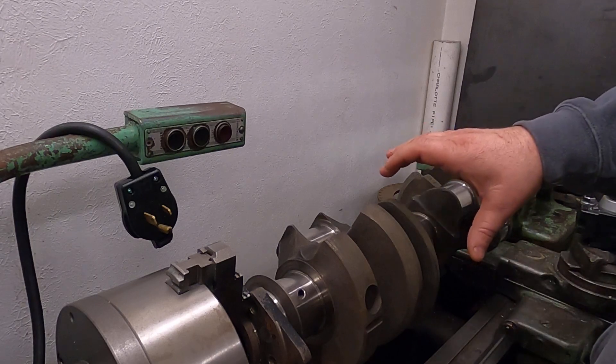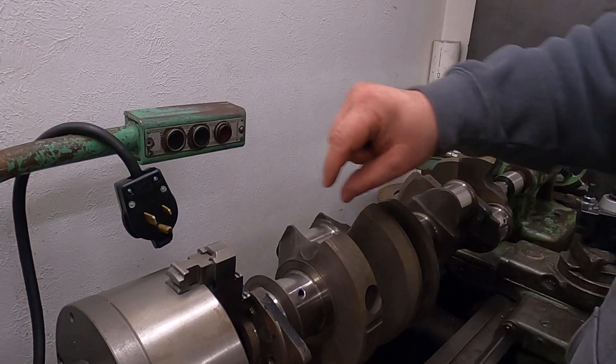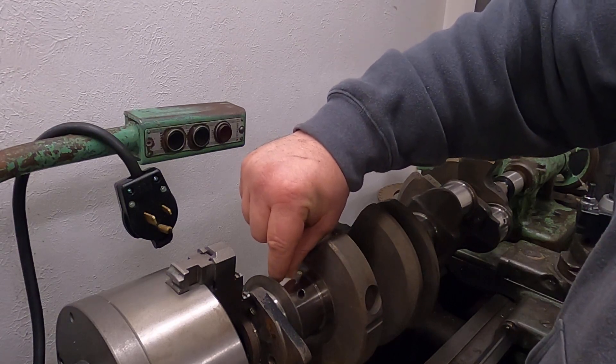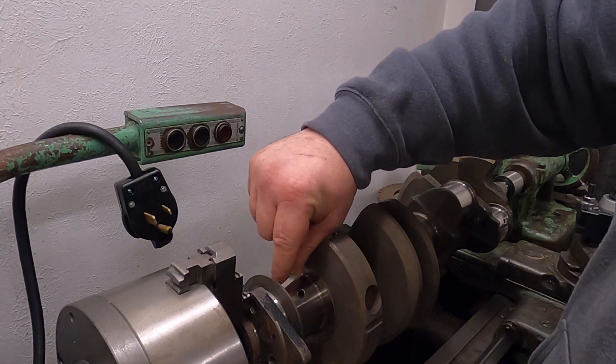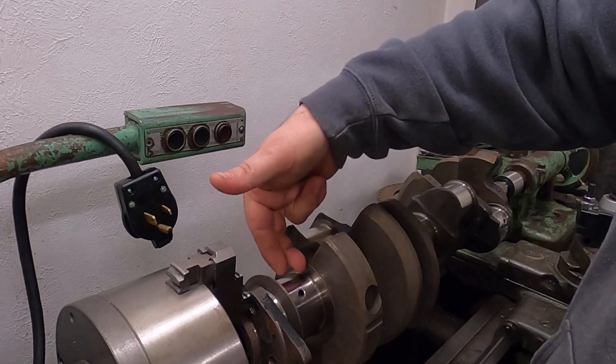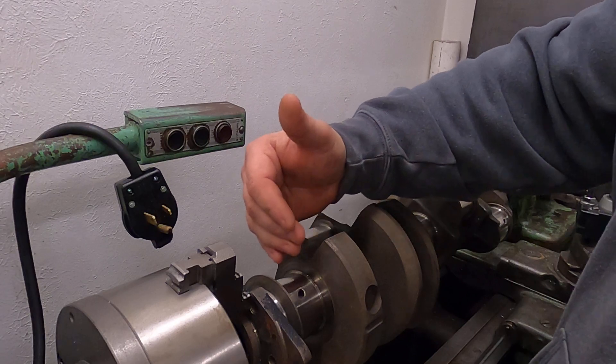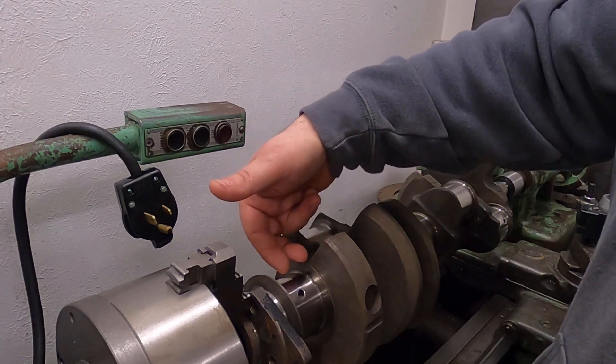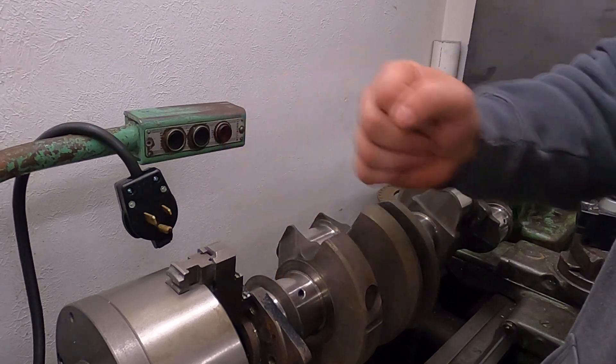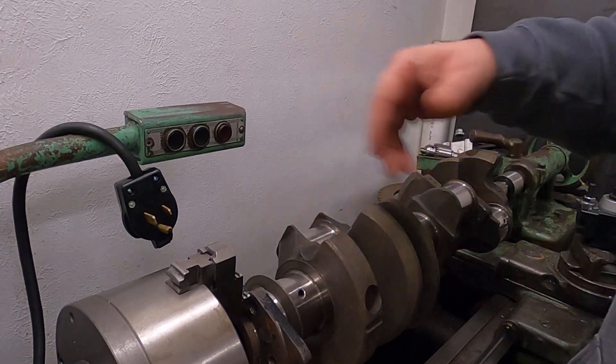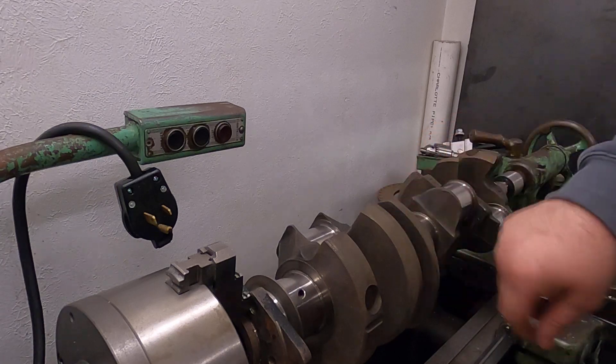You'll notice this one is a different bearing shell because it's got the thrust flanges on it, which rides inside here for the crank to go back and forth - the thrust. I usually try to set that about five thousandths. Anyway, I'll get into that later.